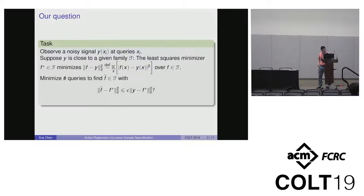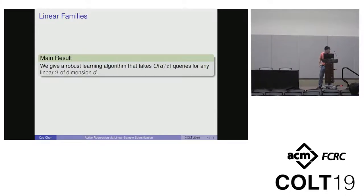Let me discuss our results for linear families. Our main result is a robust learning algorithm that takes O(D/epsilon) queries for any linear family of dimension D. Previously, this was known only for polynomials by Cohen, Davenport, and Leviathan. I'll give an alternate statement for this result.